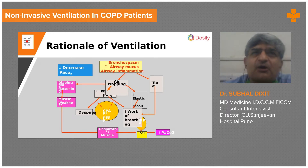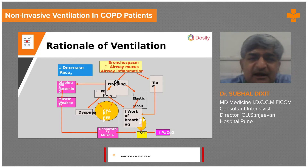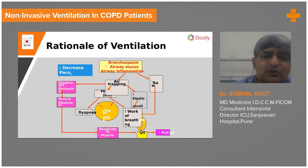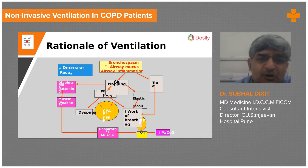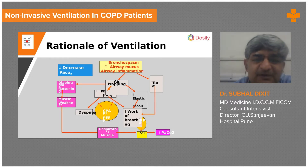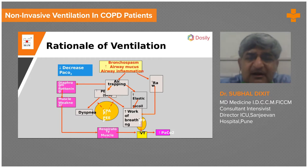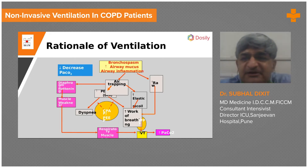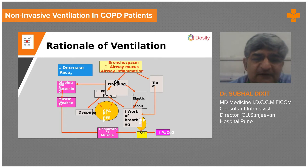You are not supposed to compromise on nebulisation, the use of antibiotics, and proper other care, which needs to be continued. The rationale in these patients is to decrease the CO2 level. There is bronchospasm, airway mucous flooding, and airway inflammation. This bronchospasm and air trapping gives rise to dyspnea. With the application of PEEP and positive pressure, elastic recoil and respiratory mechanics improve, the workload on respiratory muscles decreases, work of breathing goes down, respiratory distress reduces, and as a result carbon dioxide levels decrease.